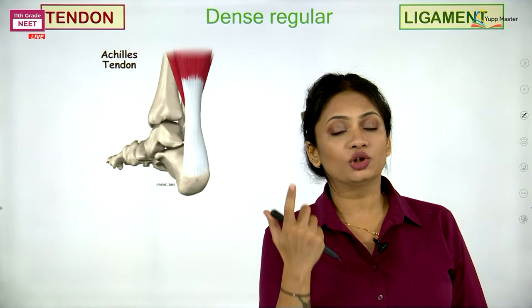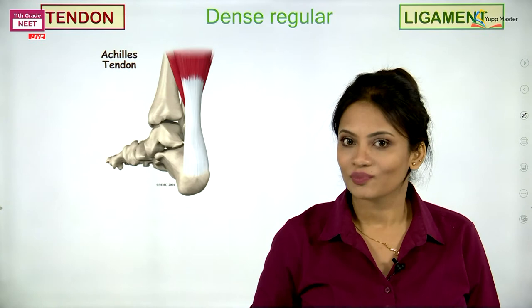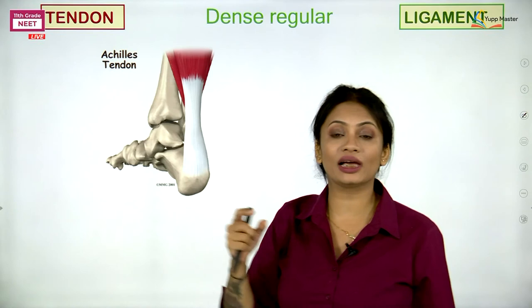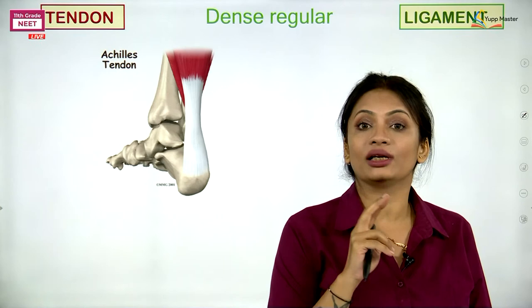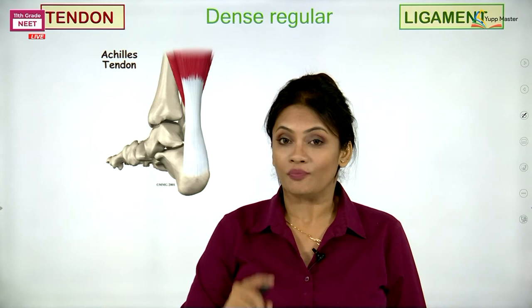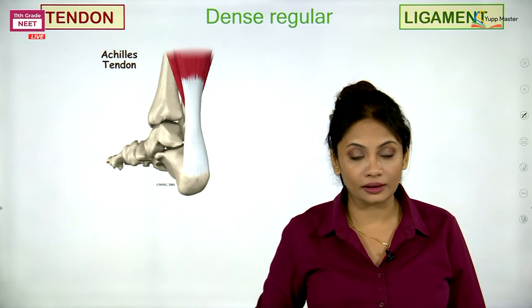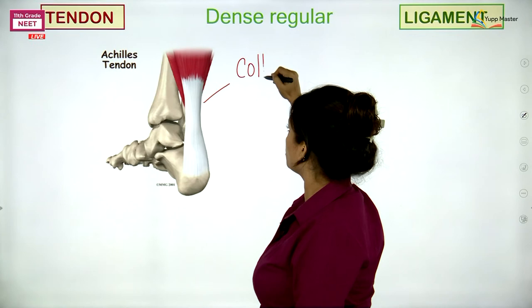The muscles which are attached to the bones are attached with the help of fibres, and these fibres give strength. In our last lecture, I explained that there are two types of fibres — the white fibres and the yellow fibres. White fibres were made up of a protein called collagen.